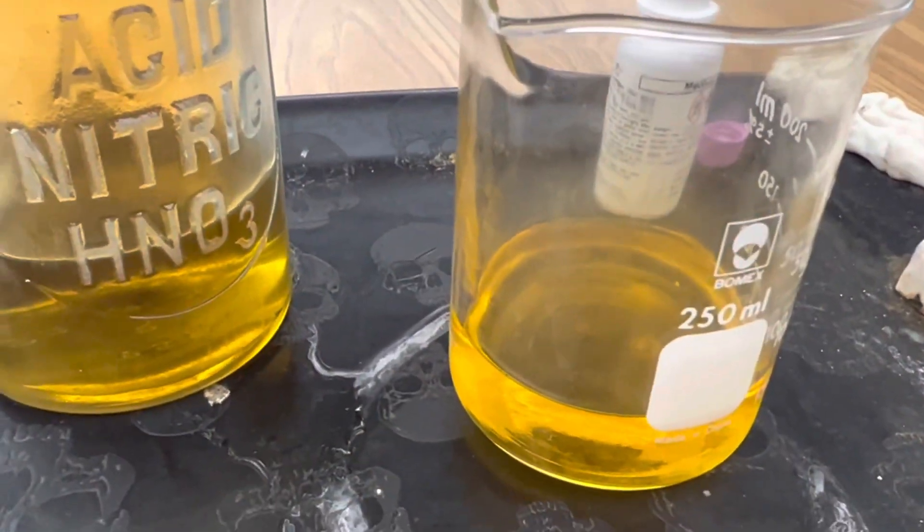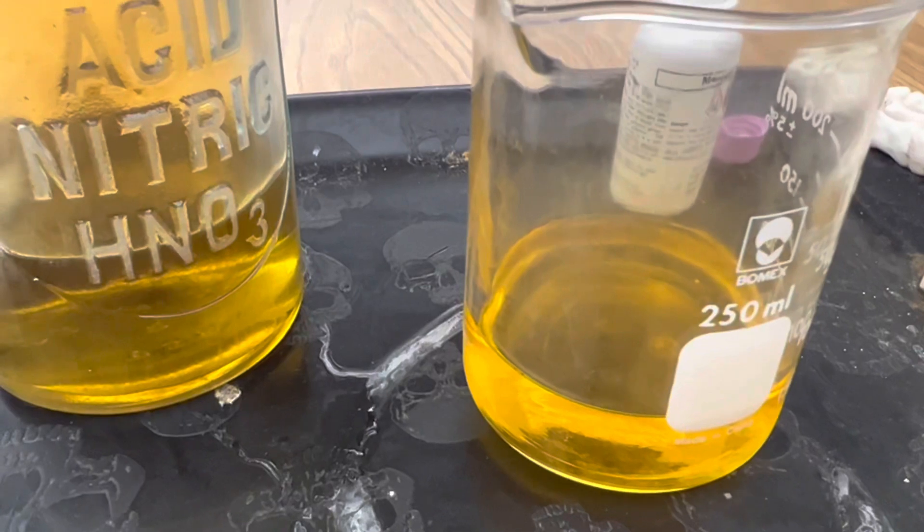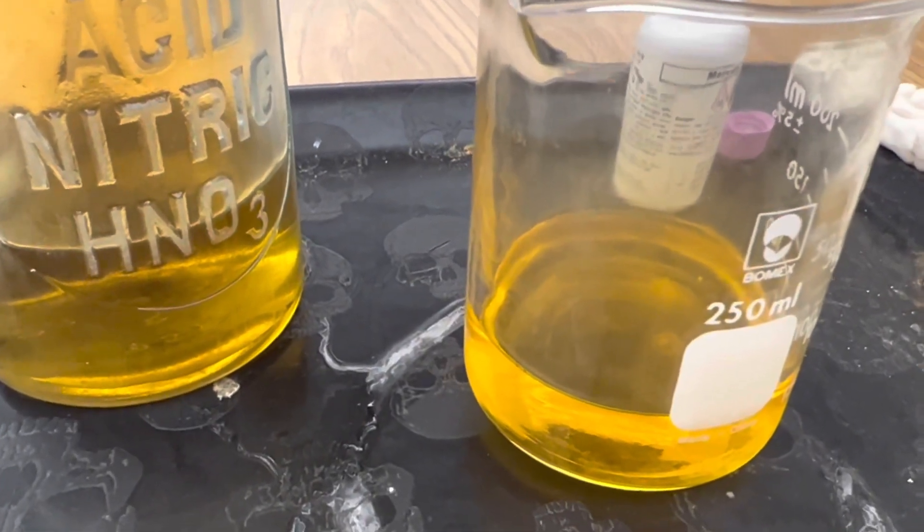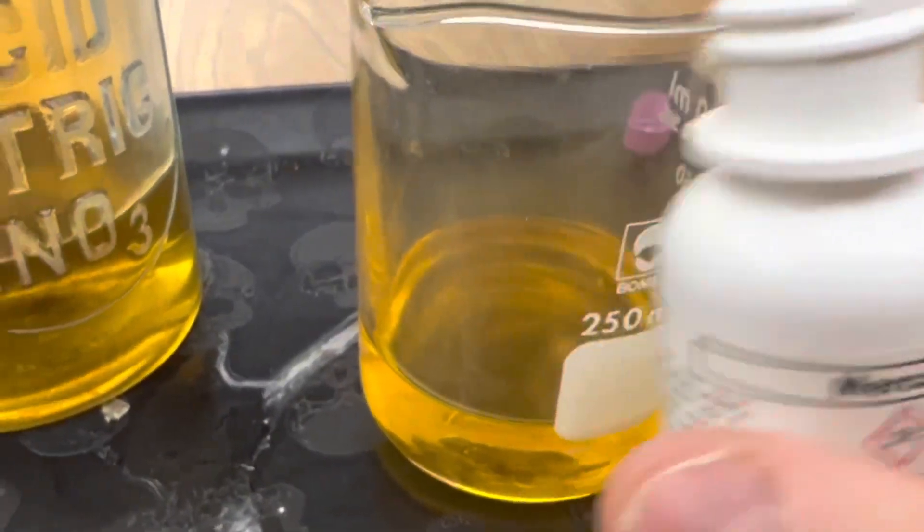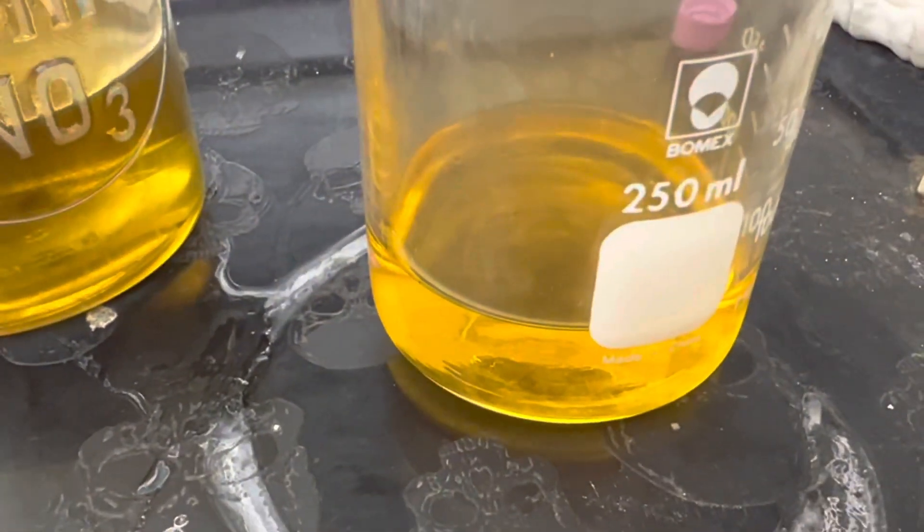The first step is to add 50 milliliters of nitric acid. I'm using 15 molar nitric acid in my beaker and then I'm going to add just a small amount of mercury to my nitric acid.